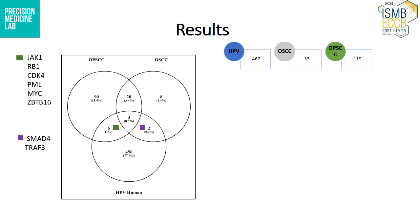For that purpose, I utilized the Venn diagram. In this Venn diagram, it is shown that between OPSCC and HPV human proteins, there were six common proteins. These were JAK1, RB1, CDK4, PML, MYC, and ZBTB16. There are two common proteins between OSCC and HPV human — these are SMAD4 and TRAV3 — and between OPSCC and OSCC along with HPV human, there are three common proteins.